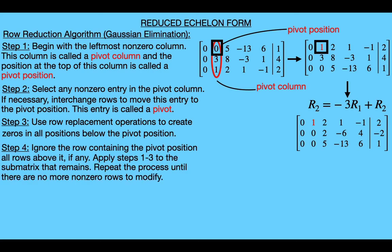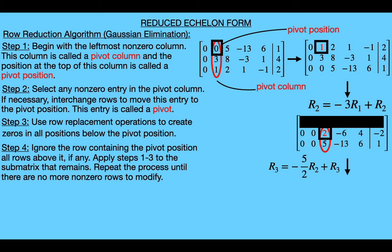Step four says to ignore the row containing the pivot position and all rows above it, then apply steps one through three to the remaining sub-matrix, repeating until there are no more non-zero rows to modify. In our example we ignore the first row and apply steps one through three to the remaining sub-matrix. The leftmost non-zero column is the third column — our next pivot column — with the pivot position at the top. We choose the two as our pivot and eliminate the elements below it by replacing the third row with the sum of itself and negative five-halves times the second row.